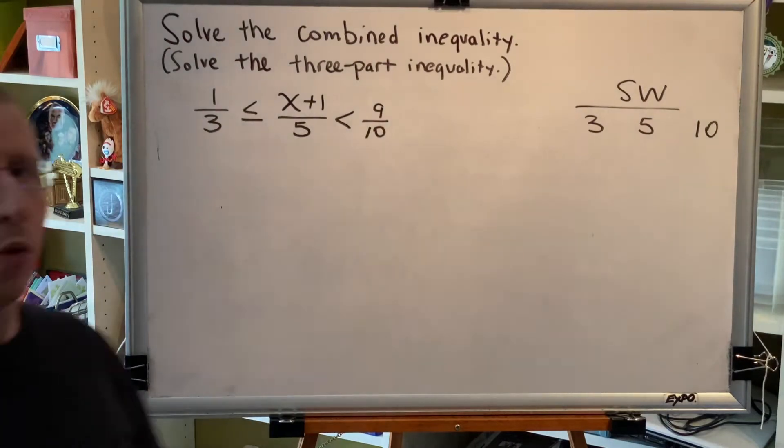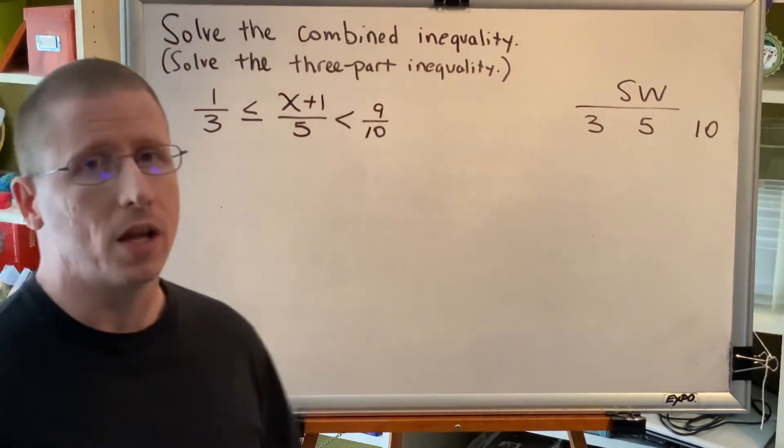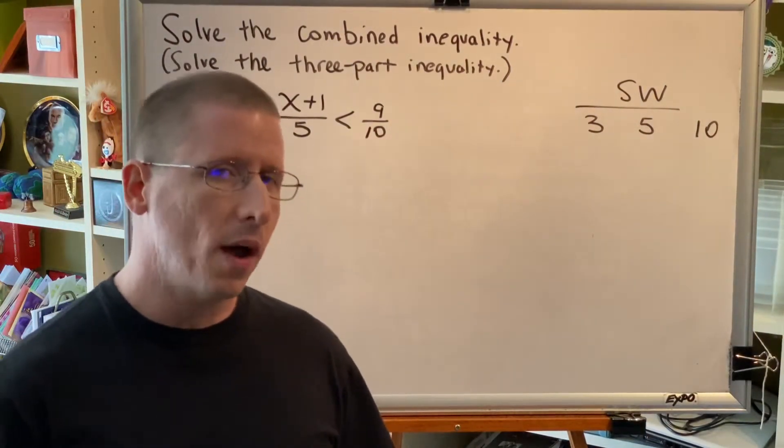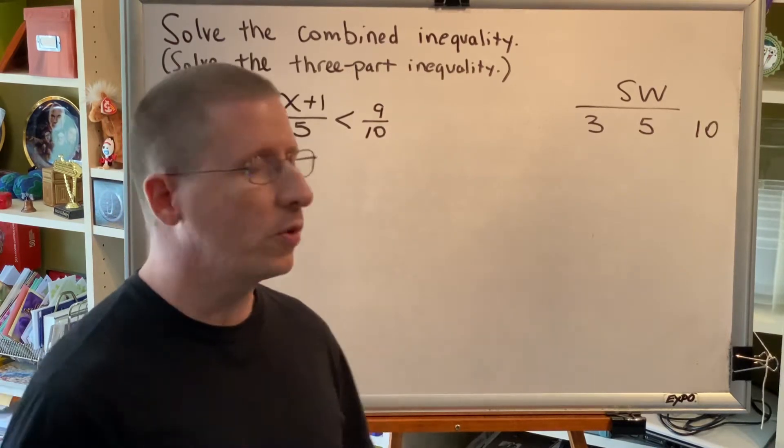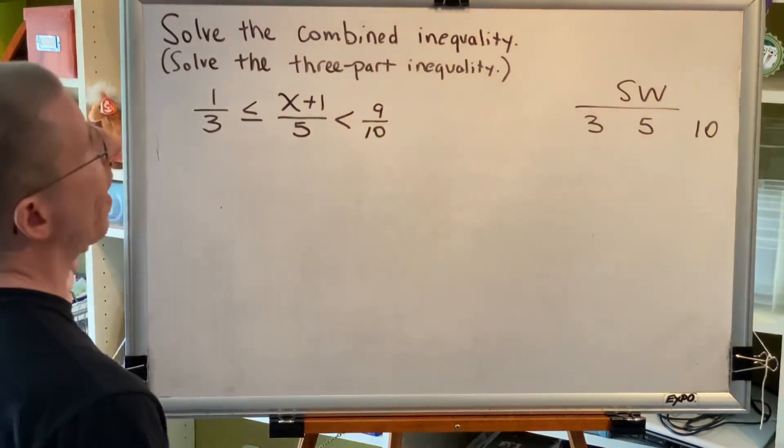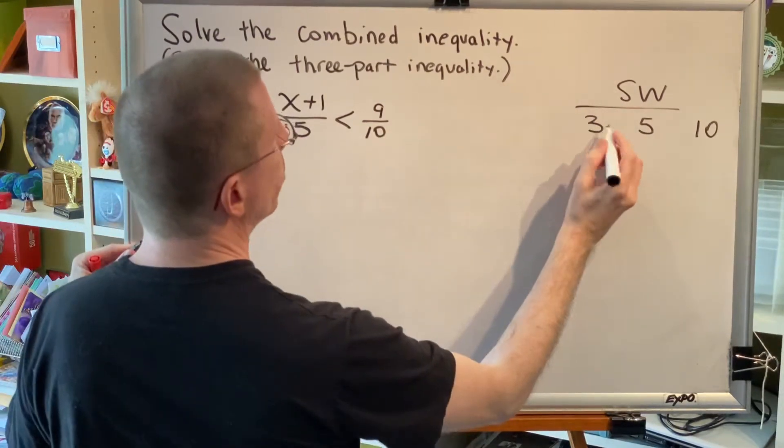Now it's my hope that you already know that the answer is 30. But in case it's been a while since you've seen finding a least common denominator or a least common multiple, here's one way you can come up with that answer. Write the multiples of each value.